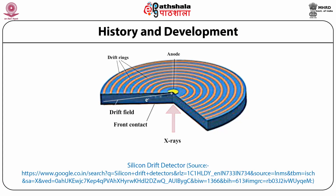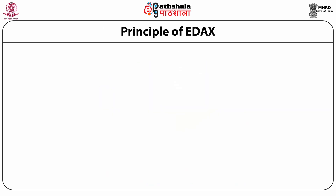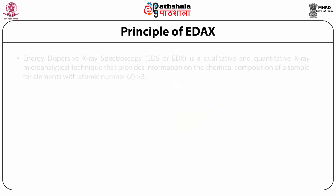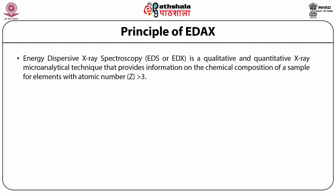The diagram of the silicon drift detector shows an anode in the center through which x-rays are passed and drift fields are produced. Energy dispersive x-ray spectroscopy, often called EDS or EDX, is a qualitative as well as quantitative x-ray microanalytical technique. It provides information on the chemical composition of a material for elements with atomic number higher than 3.